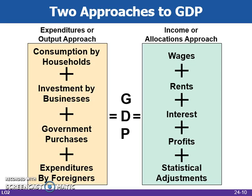Here are the two different approaches to measuring GDP. On the left, the expenditures approach measures GDP as the sum of four items: consumption by households, investment by businesses, government purchases, and expenditures by foreigners. On the right, the income approach uses different inputs: wages, rents, interests, profits, and statistical adjustments. For the purpose of this class, we will spend our time focused on the expenditures approach.